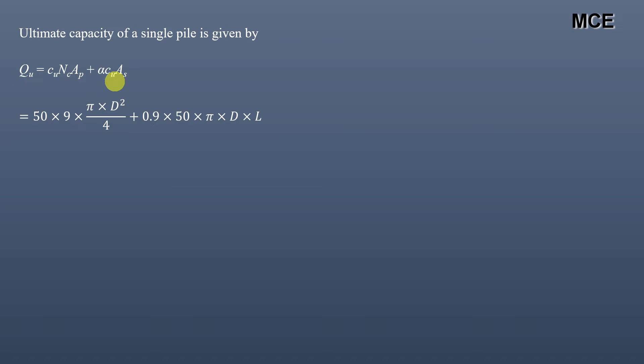...into Cu which is 50 into As, this is the surface area, so it will be π × D × L. Putting values, this will be equal to 220 kN.